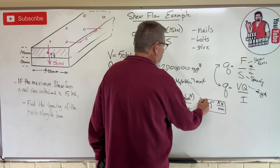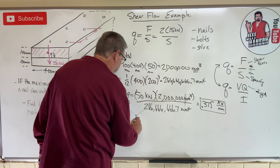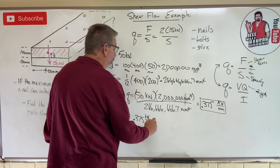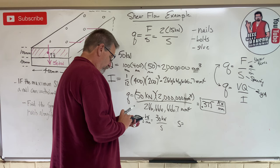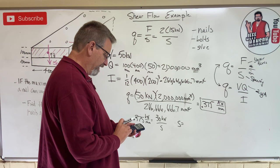It seems like a little number, doesn't it? But watch what happens when I put that little number here for q. So now 0.375 kilonewtons per millimeter is equal to 2 times 15, which is 30 kilonewtons divided by S. I need S by himself, I'll put him over there, so S is equal to 30 divided by 0.375 equals 80.